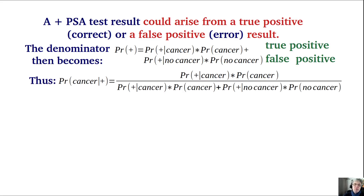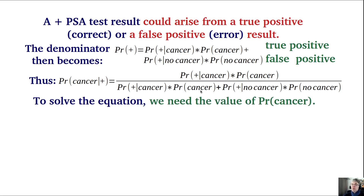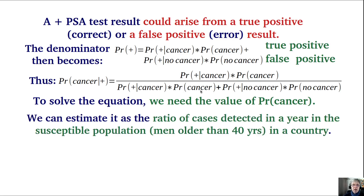Substituting into the equation gives a more complex but not really complicated expression. The probability of a positive test given cancer is the sensitivity of the test, which we know. What we don't know is the probability of having cancer. To estimate it, we can use the ratio of detected cases of prostatic cancer in a susceptible population — men older than 40 years — in a given country in a given year.